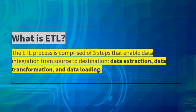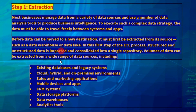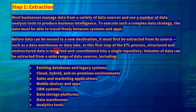Extraction is the first step. Most companies manage data from a variety of data sources and use a number of data analysis tools to produce business intelligence. To execute such a complex data strategy, the data must be able to travel freely between systems and apps. Before data can be moved to a new destination, it must first be extracted from its source, such as a data warehouse or data lake. In this first step of the ETL process, structured and unstructured data is imported and consolidated into a single repository.